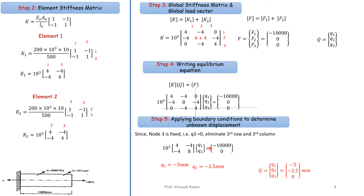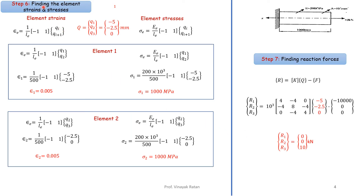Using the unknown field variables, we find element strains and stresses. The element strain formula is: ε = (1/Le) × [−1, 1] × [qi; q(i+1)]. For element 1, the node numbers are 1 and 2, so we use q1 and q2; for element 2, we use q2 and q3.